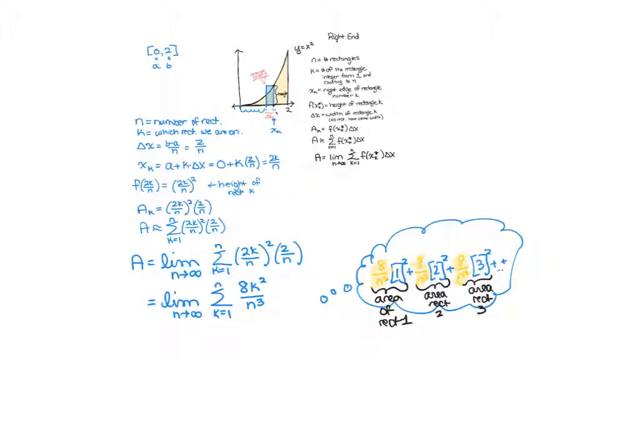So this equals the limit as n goes to infinity, 8 over n cubed. We pulled that out. Sum k goes from 1 to n of k squared. Now this is a sum that we know. I should say that before we started taking the limit, this approximate area, this is usually how we actually use Riemann sums. If we're going to use Riemann sums, we'll use a computer and we'll use a thousand or a million rectangles, however many rectangles we need. But a computer can add them all up and we can get with as much precision as we need.